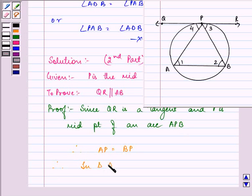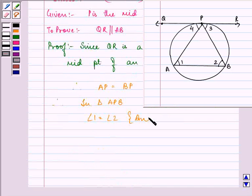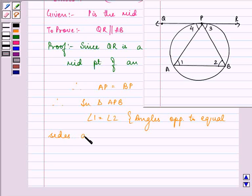Therefore, in triangle APB, since AP is equal to BP, this implies that angle 1 will be equal to angle 2. Because of the simple reason that angles opposite to equal sides are equal to each other.